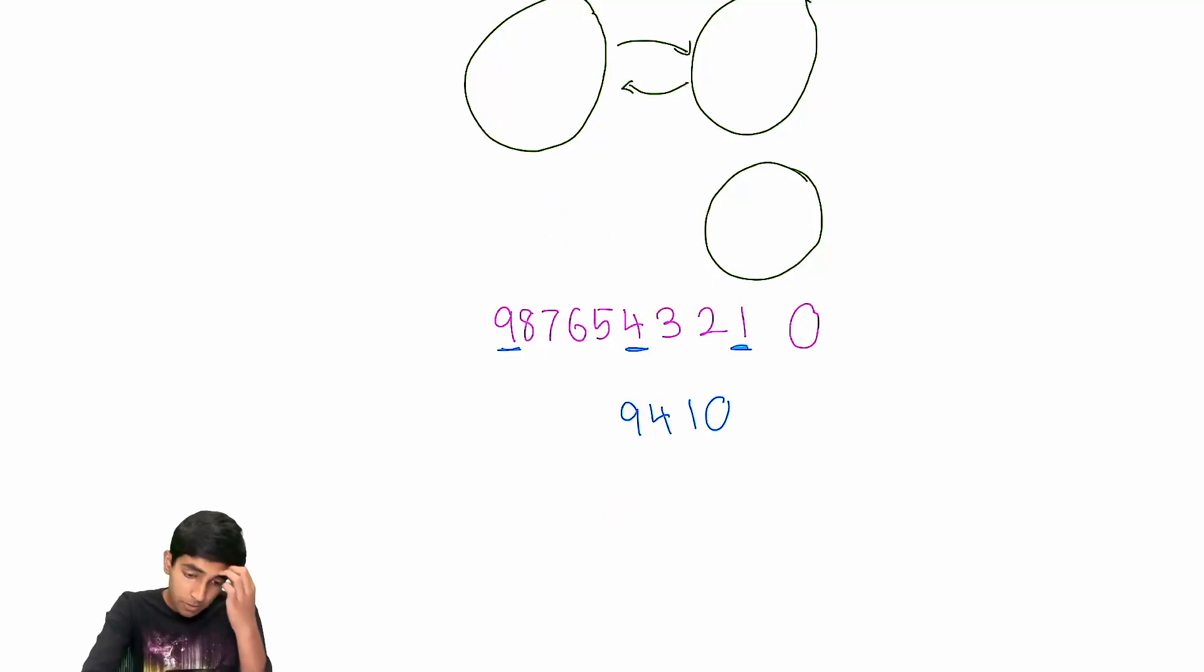So then it just becomes a question of how many ways are there to select some number of digits from this group? And that's just standard. It's just 2 to the 9. You either have a digit or you don't. You either have this digit or you don't have it. You have this or you don't have it. You have it or you don't have it. So 2 to the 9.